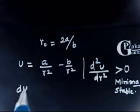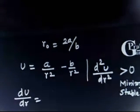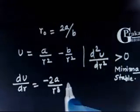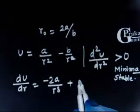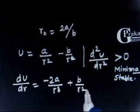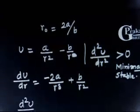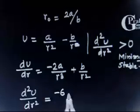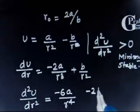Let us do the differentiation. dU/dR equals minus 2A/R³ plus B/R². Now differentiating once again, d²U/dR² gives minus 6A/R⁴ minus 2B/R³.